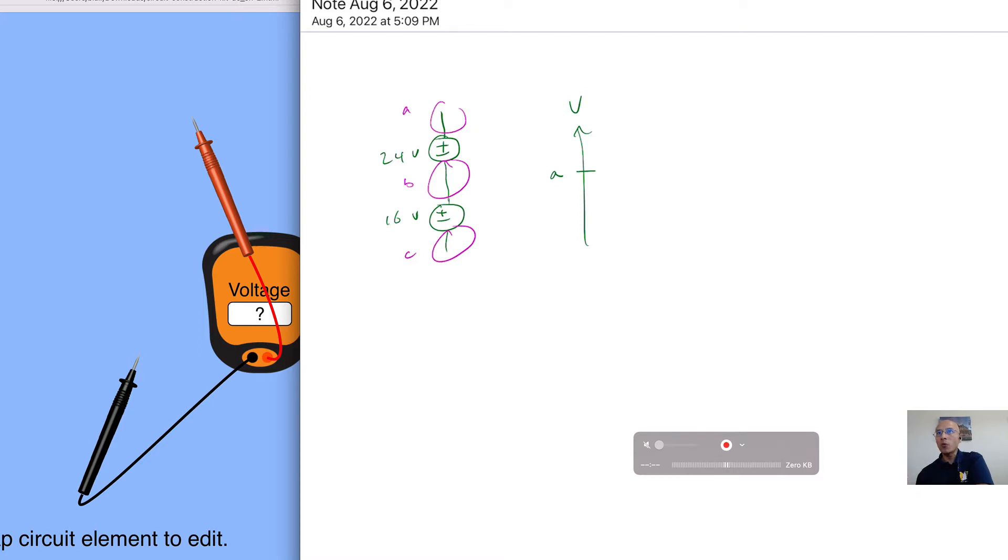So what we know from this circuit diagram is that node A, because of the battery, the voltage source is 24 volts higher than node B. So we'll put here B, and we'll say that this difference is 24 volts. And then we know that C is 16 volts lower than B, so we'll plot C here.